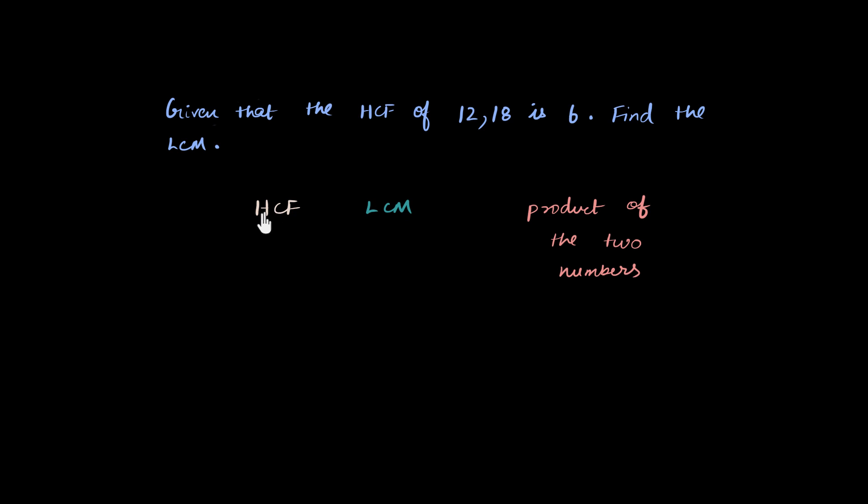HCF you know how to find, LCM you know how to find, product you've always known how to find, you just have to multiply these two. Then there is a relationship between these. It's like the HCF into the LCM. The product of the HCF and LCM will be equal to the product of the two numbers.